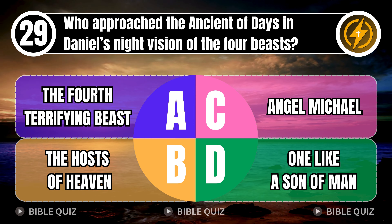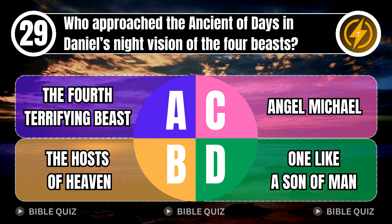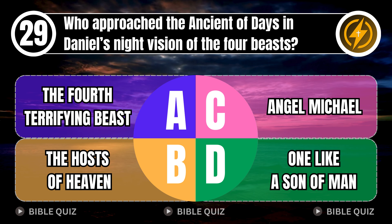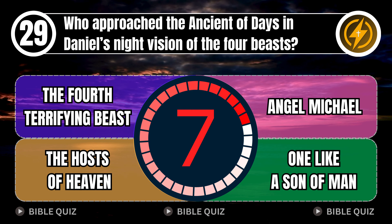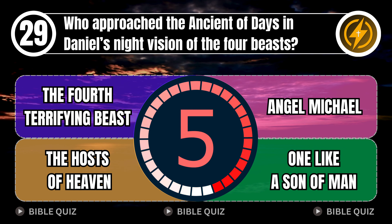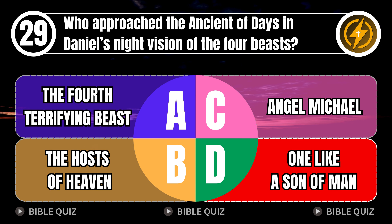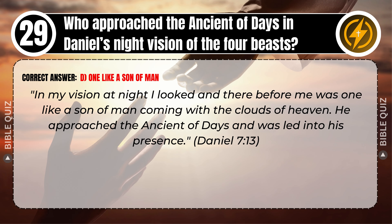Question 29: Who approached the Ancient of Days in Daniel's night vision of the four beasts? A. The fourth terrifying beast. B. The hosts of heaven. C. Angel Michael. D. One like a son of man. Correct answer: D. One like a son of man. In my vision at night I looked, and there before me was one like a son of man, coming with the clouds of heaven. He approached the Ancient of Days and was led into his presence. Daniel 7 verse 13.